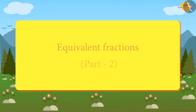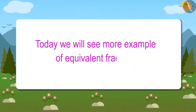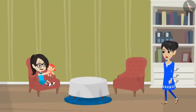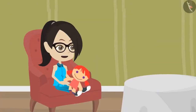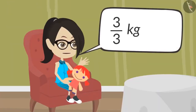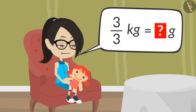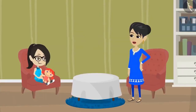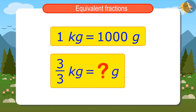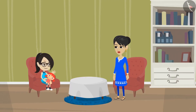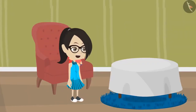Equivalent Fractions, Part 2. Today we will see more examples of equivalent fractions. Mummy asks Vandana to go get 3 upon 3 kilograms of potatoes from the market. Vandana asks mummy to tell her in grams how many grams are in 3 upon 3 kilograms. Mummy says: one kilo has one thousand grams, so now you find out how many grams will be there in 3 upon 3 kilograms and bring that much of potatoes. Vandana agrees and says she will find out and get the potatoes.